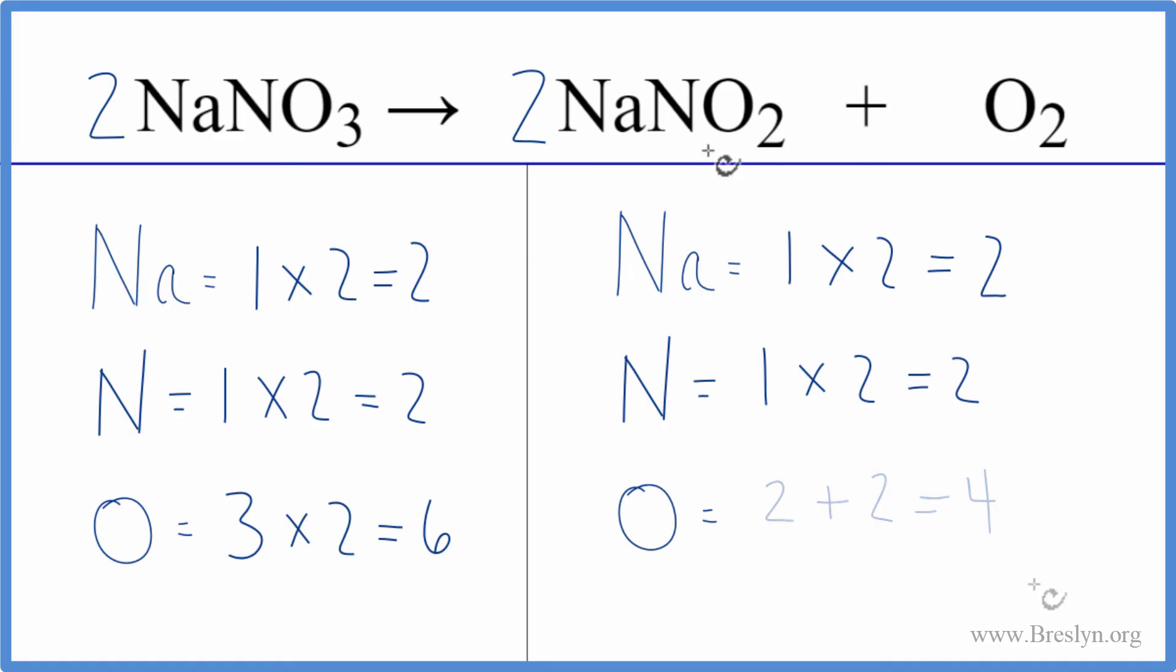Let's update the oxygens. We have the two times the two, that's four, plus we have the two here, and that gives us six, and we're done. This equation is balanced.